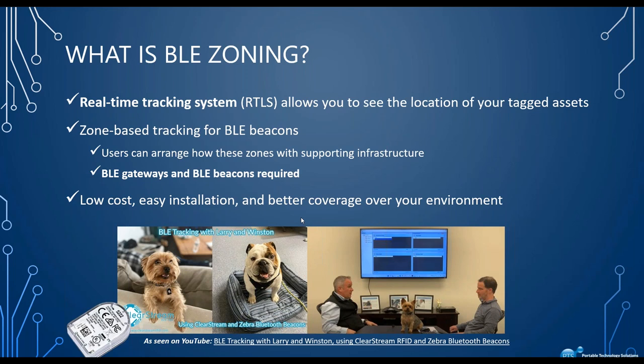You can easily set them up without having to do any tuning like you might with fixed RFID reading — no configuring antennas or aiming antennas for a portal to get directionality. It's just a simple plug-and-play: plug it into your network, attach it to the ceiling, and use our ClearStream product to start tracking those locations. We also have a nice video online that demonstrates this with Winston and Larry, two of our dogs here in the office, that have a beacon attached to them and we can track them throughout the offices here.